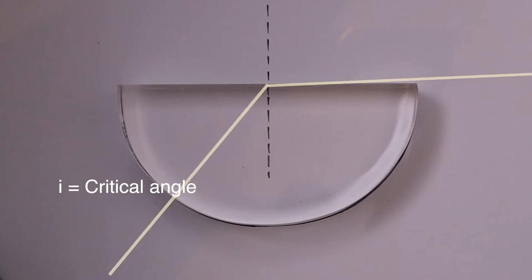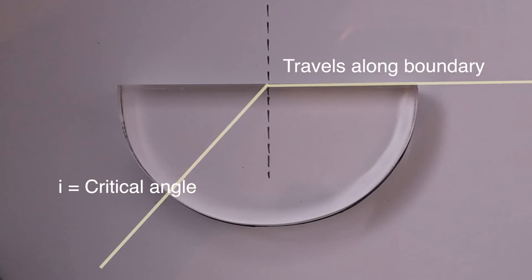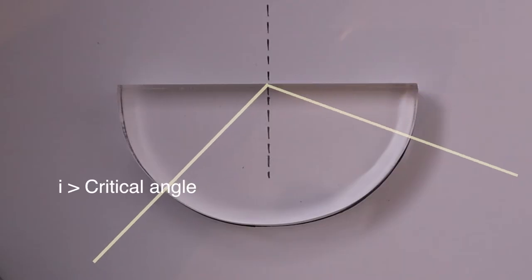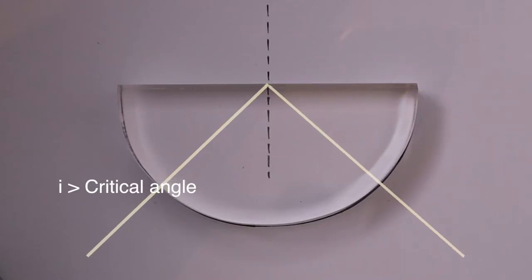When the angle of incidence is exactly equal to the critical angle, it travels along the boundary. But the moment that it becomes larger than the critical angle, the light is fully reflected. We call this total internal reflection. So to find the critical angle, we want the point just before total internal reflection.